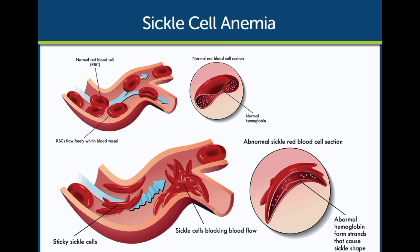These sickle-shaped red blood cells can get stuck in small blood vessels, blocking blood flow and causing pain, organ damage, and an increased risk of infections. People with HBSS can experience chronic pain, which can occur in any part of the body, and the severity and duration of pain episodes can vary widely.